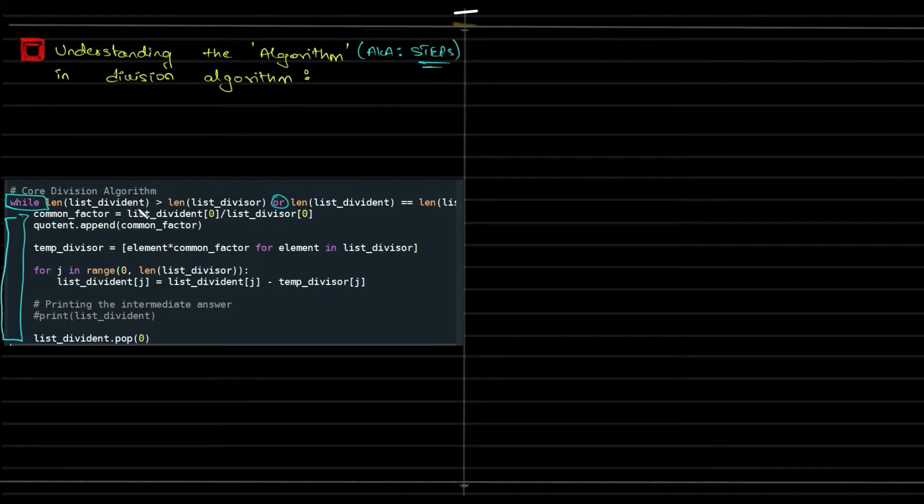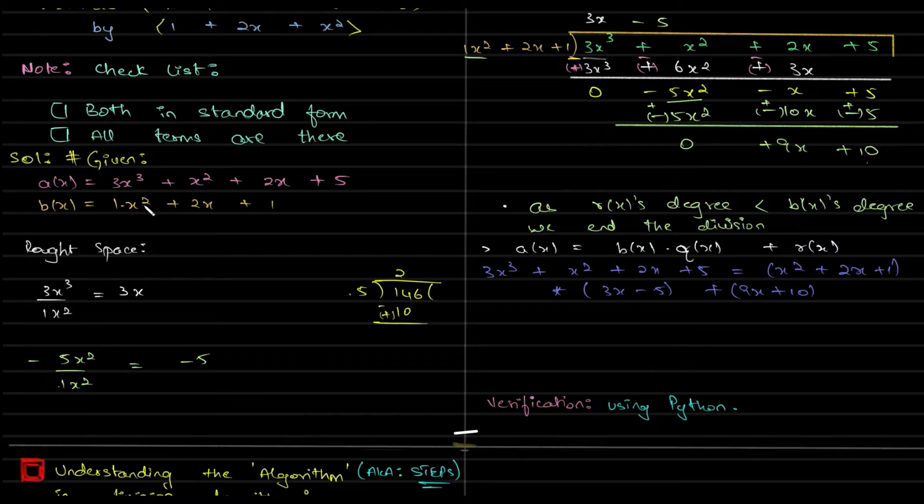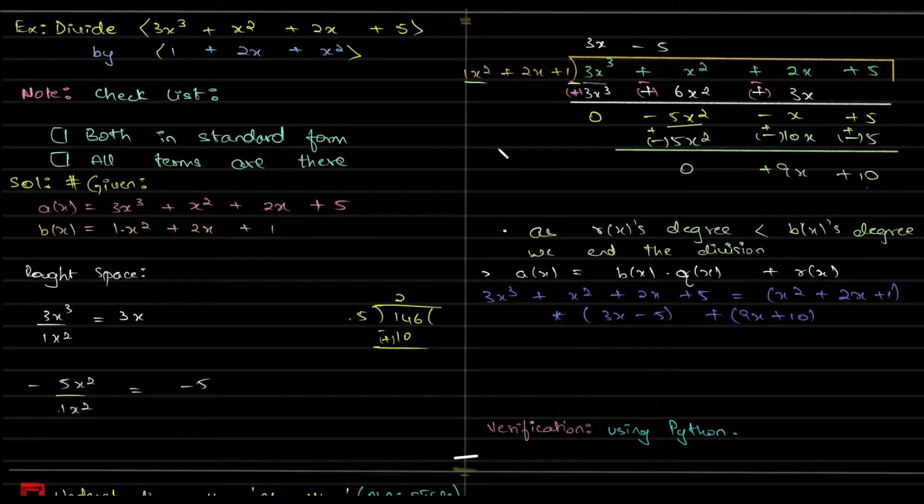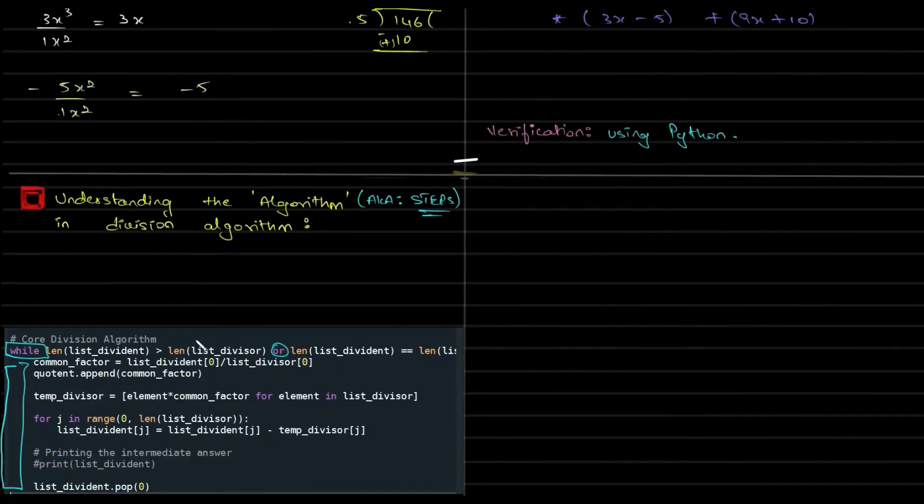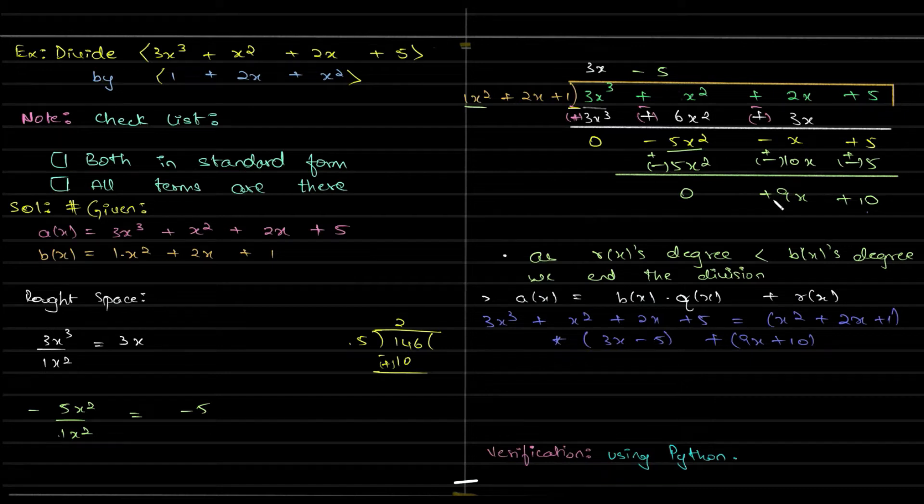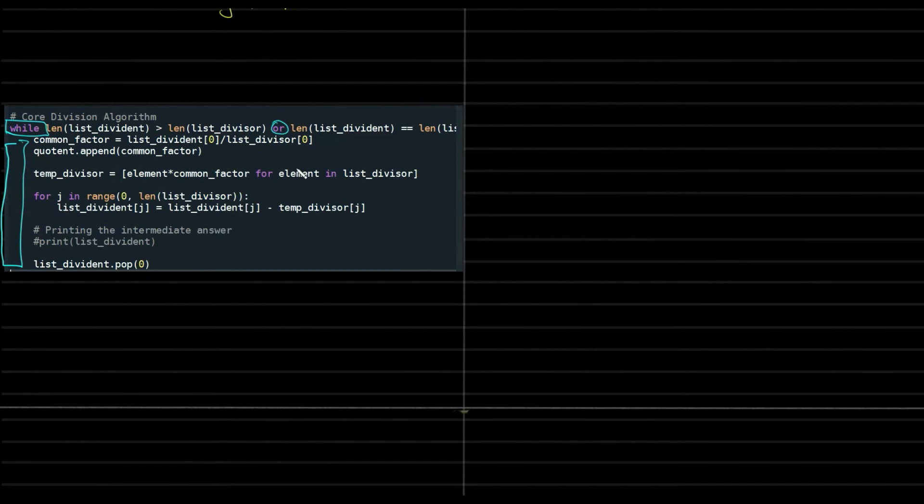If the length, when I tell length, indirectly I am talking about the degree. If the dividend degree is lesser than the divisor's degree, the process stops, the division stops. See, in this example, the last step, the last line over here is the remainder. Why is this the remainder? Why can't we divide it more? Because the degree of this is lesser than the degree of the divisor. Because of that, we stopped.